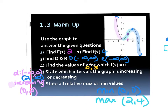A student asks: why is the range positive infinity if 3 is on the y-axis and not infinity? Because you're going from the bottom all the way up to the top. So you always go in order of the value — the smaller number comes first, the larger number second. Because the arrows are pointing down and up, you've got both negative infinity to positive infinity for the range.